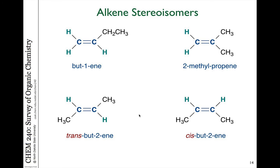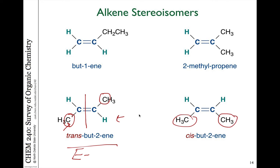This E and Z nomenclature can also be used for cases where we could still use cis and trans. For example, in trans bute-2-ene, the carbon substituent has higher priority over hydrogen on both sides of the double bond, and those groups are on opposite sides — so this could also be called E bute-2-ene, while cis bute-2-ene would be Z. In this case you can use either trans/cis or E/Z interchangeably.